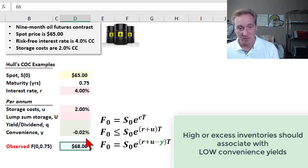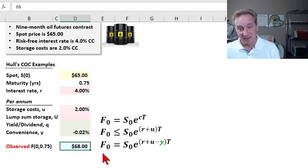becomes closer to zero, maybe even negative. So that's basically the role of the convenience yield as a plug variable that explains a market consensus view on the benefits, the intangible benefits of owning that commodity.